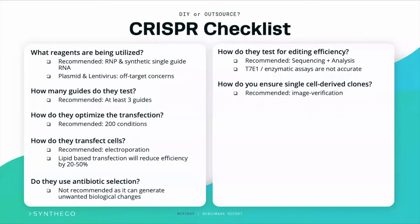How are they ensuring that single-cell clones are actually derived? At Synthago, we have an automated image verification process. So what does your particular choice of provider do?